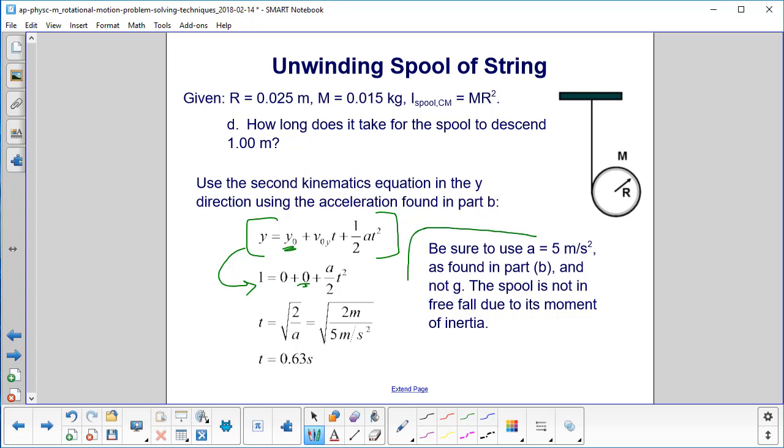And be very careful here. Make sure you use A equal to 5 meters per second squared, as we found in part B. Don't use the value for G here. You may have done that automatically because it's falling, but you are not in freefall here. You've got a moment of inertia on the spool, and that's contributing to the fact that we cannot be in freefall. So we put our 5 in there for the acceleration, which is half of G, and we see it takes us 0.63 seconds.